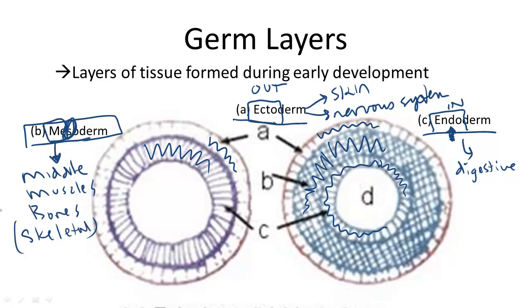So remember that the three germ layers in animals developed greater complexity over the evolutionary timeline. And the three in order from outer to inner are ectoderm, mesoderm, and endoderm. Our earliest organisms only consisted of two germ layers, the ectoderm and the endoderm.